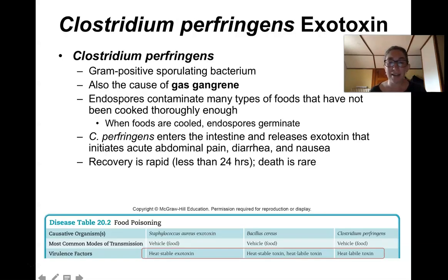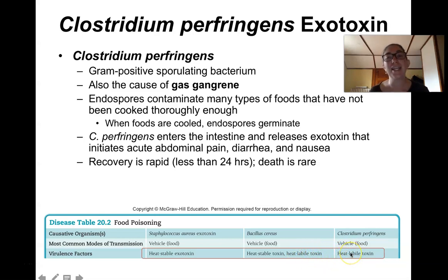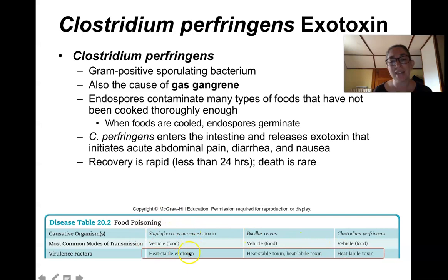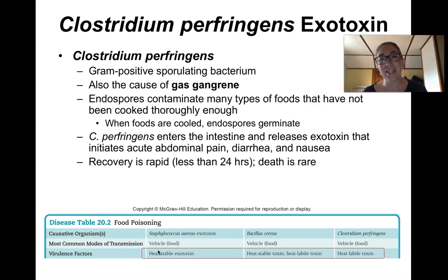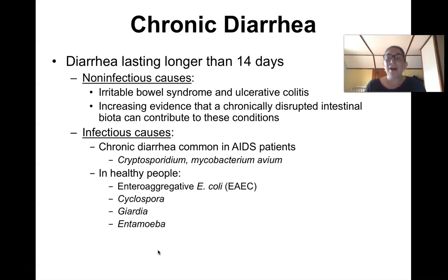An important distinction: Bacillus cereus and Clostridium perfringens toxins are often heat-labile, meaning that by heating the food properly you can denature the toxin and it won't make you sick. But Staph aureus and some Bacillus cereus toxins are heat-stable — even if you reheat the food, the toxin is not denatured and it still makes you sick. That's probably what happened with my quiche — I did reheat it in the microwave, it was nice and hot when I ate it, but a heat-stable toxin was still present.